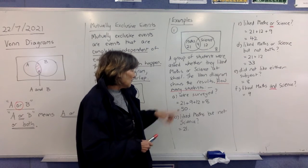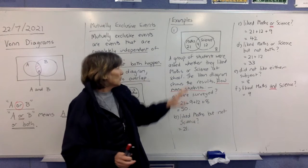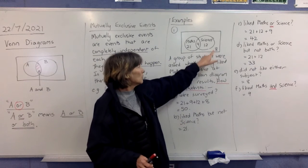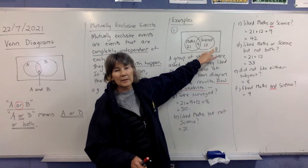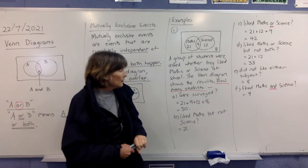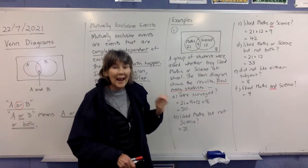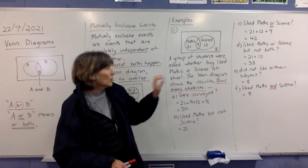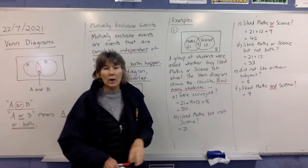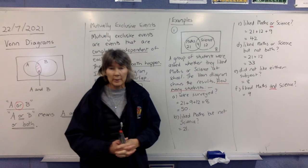In E, they're asking how many students did not like either subject? Well, they didn't fit into any circle. It's these people floating around the outside here, 8. And in F, they're asking how many students liked maths and science, both of them. And it's just the 9 in the middle there. So I'm going to come back in the next video and do some more examples on this.